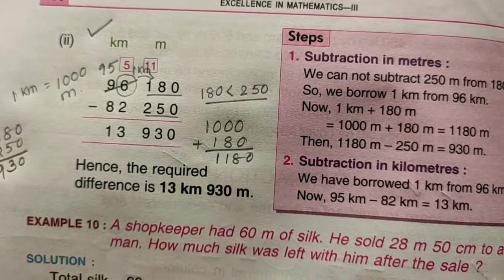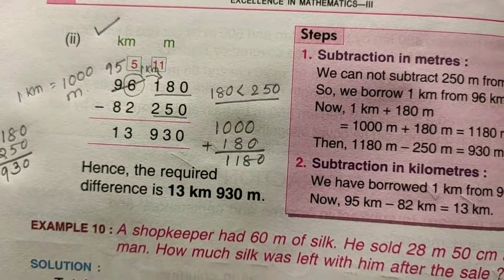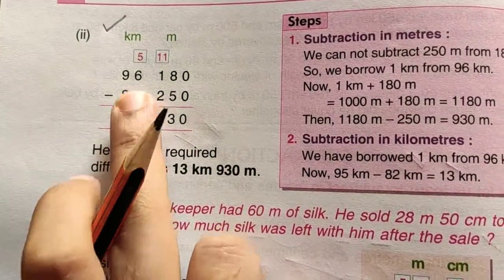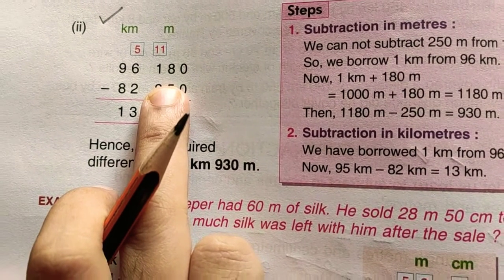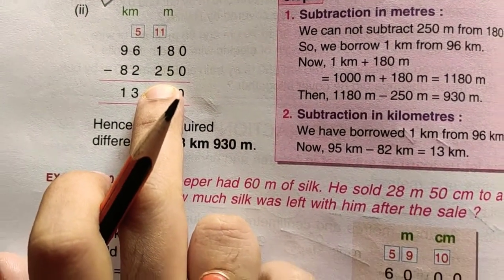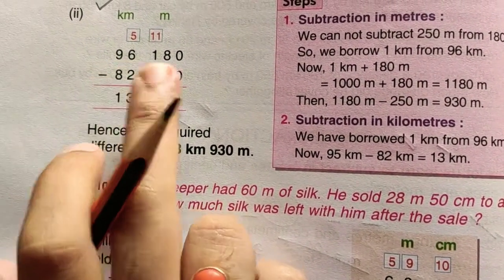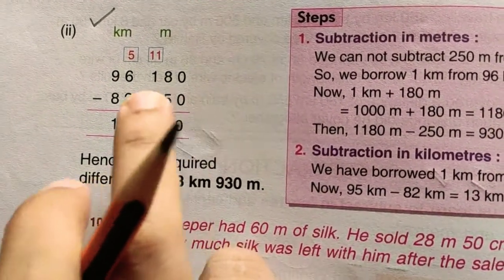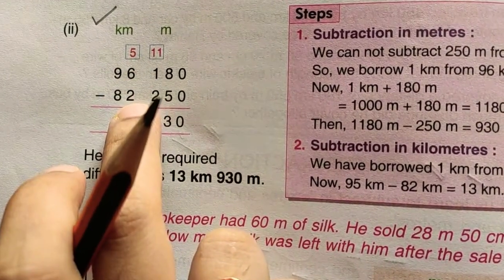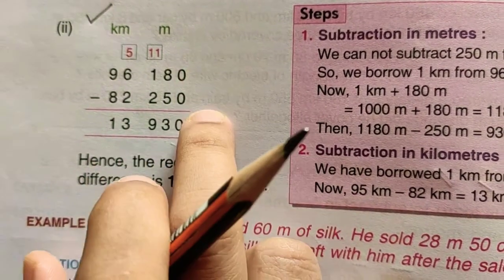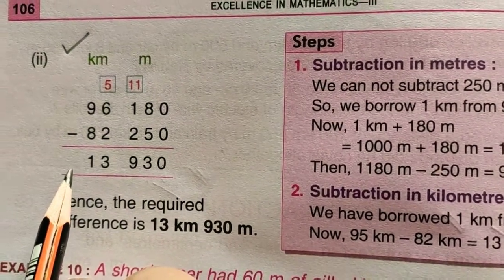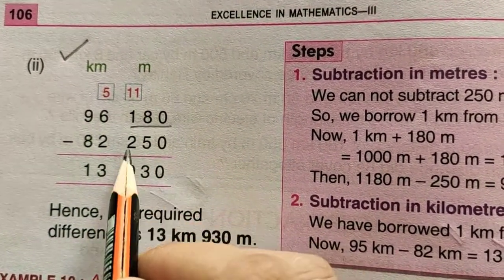Now look at another example where we are borrowing from kilometer to meter. The problem is 96 kilometer 180 meter minus 82 kilometer 250 meter. So like every other addition subtraction, first we have to make the columns. Then put the values according to their column: kilometer has 96 and 82, and meter has 180 and 250.